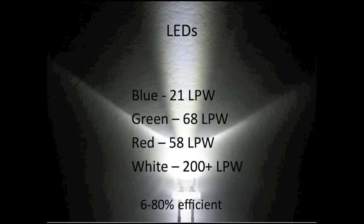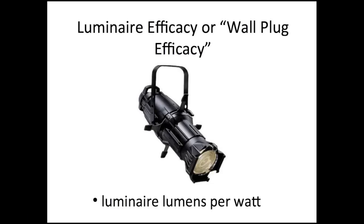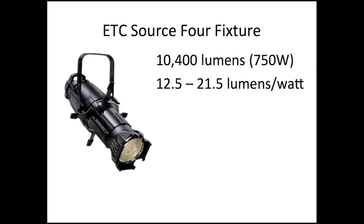Keep in mind that's under perfect laboratory conditions. What we're really more concerned about is the wall plug efficacy or luminaire efficacy — after you drop the light source into the luminaire, how much light comes out the front. The industry standard for white light, the ETC Source 4 fixture, outputs about 10,400 lumens with a 750-watt lamp, giving you about 12.5 to 21.5 lumens per watt depending on the lens.